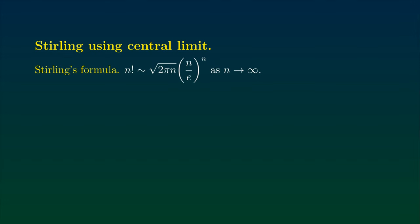Stirling's formula is a well-known formula in mathematics that gives you some kind of asymptotic behavior of n factorial when n is large. More precisely, it says that n factorial behaves like square root of 2πn times (n/e)^n. 'Behaves like' here means that the left-hand side divided by the right-hand side converges to one as n goes to infinity.